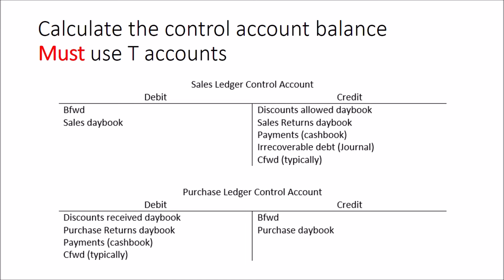The second possible question type on sales ledger control accounts or purchase ledger control accounts - alternatively called trade receivables or trade payables control accounts - asks: what is the balance on those accounts? For this question you must use T-accounts. That's why T-accounts are pushed so heavily in the introduction to bookkeeping. Don't try to use columns or any other approach - T-accounts all the way. You must also understand where the postings from the day books go.